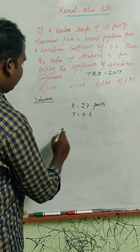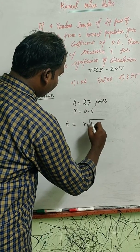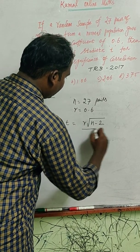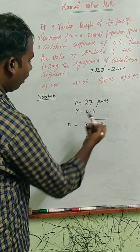Statistic t value would be formula r into root of n minus 2 divided by 1 minus r square. We have n value, r value.